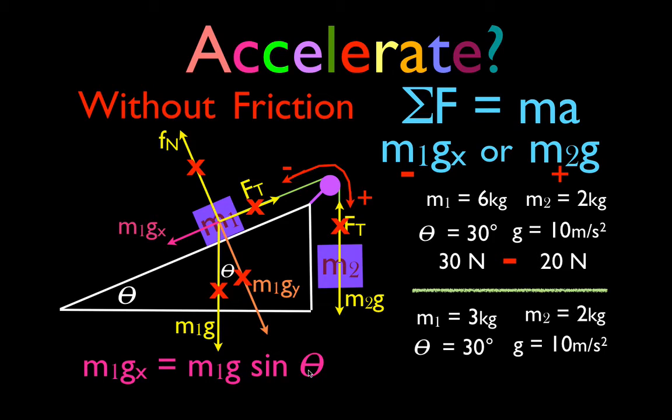M1GX is M1G times the sine of θ. So that's M1 times g, which is 3 times 10 is 30, times the sine of θ, which is one half. That means that M1GX has now decreased by half to 15.